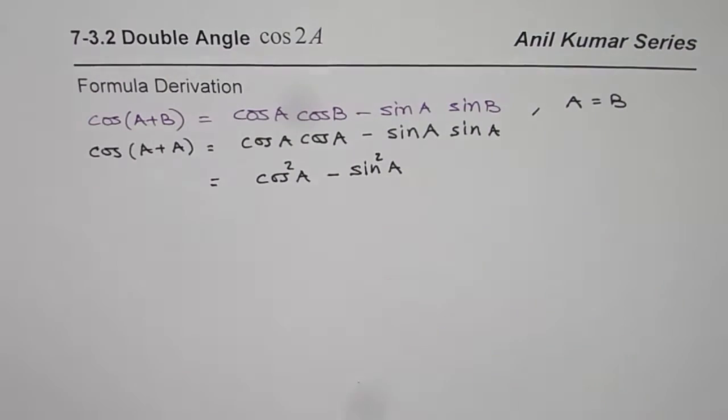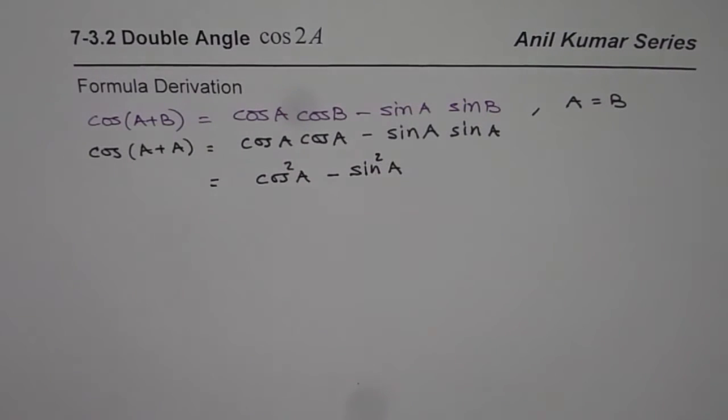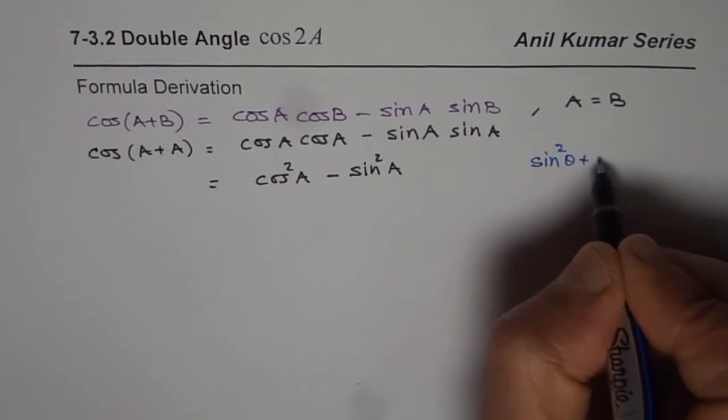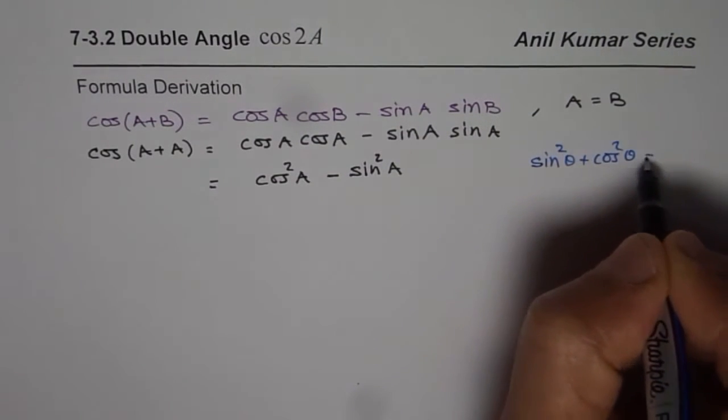Now this is one of the formulas. In the book you must have seen there are three formulas. How to get them? To get them we use the identity which is sin square theta plus cos square theta equals to 1.